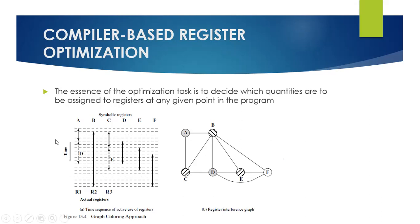Now, how can we associate this problem with our graph coloring problem? These symbolic registers will be our nodes, and the number of actual registers will be our colors — meaning we have three colors. We have nodes A, B, C, D, E, F. Which nodes are connected to each other? The nodes which interfere — that is, overlap — with each other. So A and B overlap, A and C overlap and are connected. A and D, A and E, A and F are not overlapping, so only those two edges exist for A.